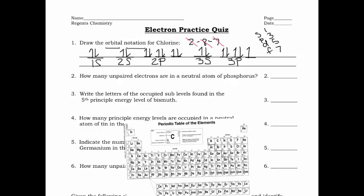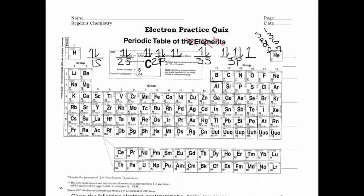Number two: how many unpaired electrons are in a neutral atom of phosphorus? Unpaired electrons are electrons sitting alone on the bus. There are two ways to do this — draw out the orbital notation, or use a Lewis dot diagram. The only time you can't use a Lewis dot diagram is with elements in groups 3 to 11 or the two lower periods, because of the Aufbau principle — they don't fill in the proper order and may have unpaired electrons not in the outermost principal energy level.